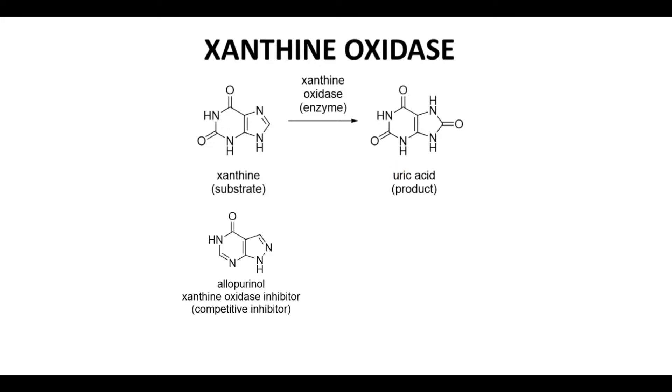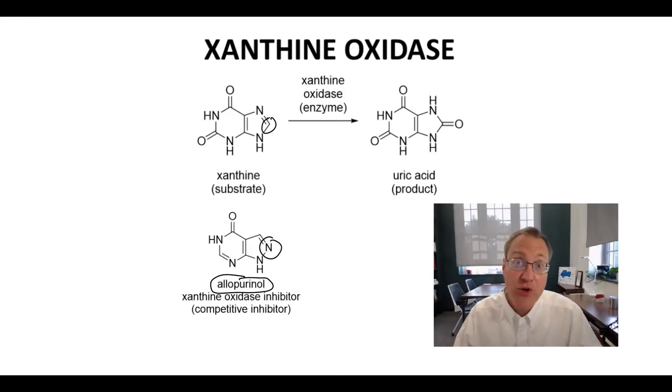A known inhibitor of xanthine oxidase is allopurinol. Allopurinol resembles xanthine but lacks a carbon atom for the oxidation step of xanthine oxidase. Allopurinol is called a competitive inhibitor for xanthine oxidase. It's competitive because it is similar to xanthine and it competes for the active site with the substrate.